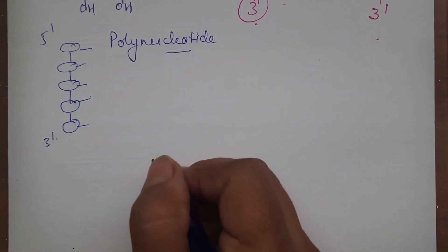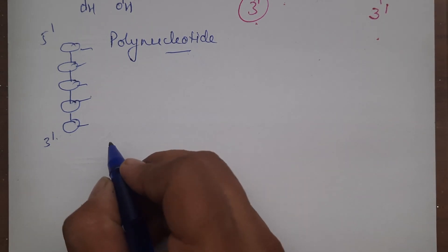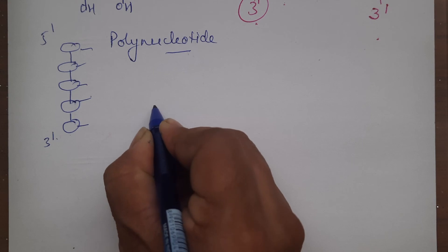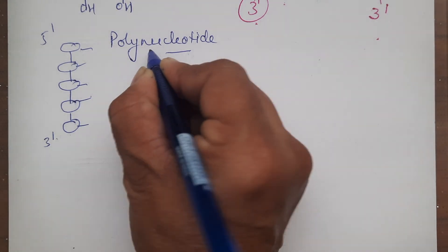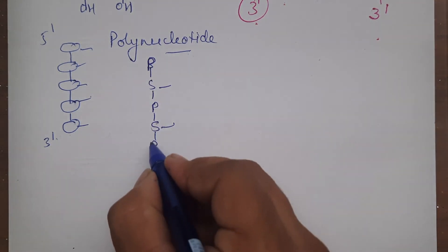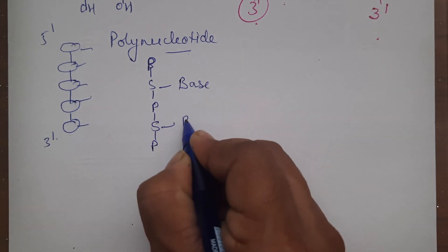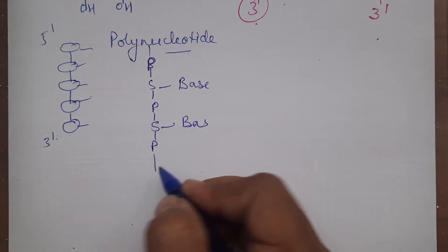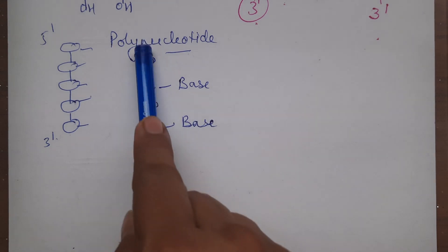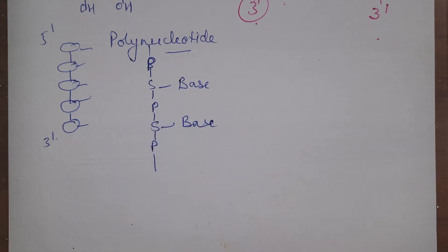We can say that in a nucleic acid chain, or polynucleotide, there is a backbone of sugar-phosphate-sugar-phosphate alternating, and on the sugar the bases are attached. So there is a sugar-phosphate backbone with bases projecting from it.